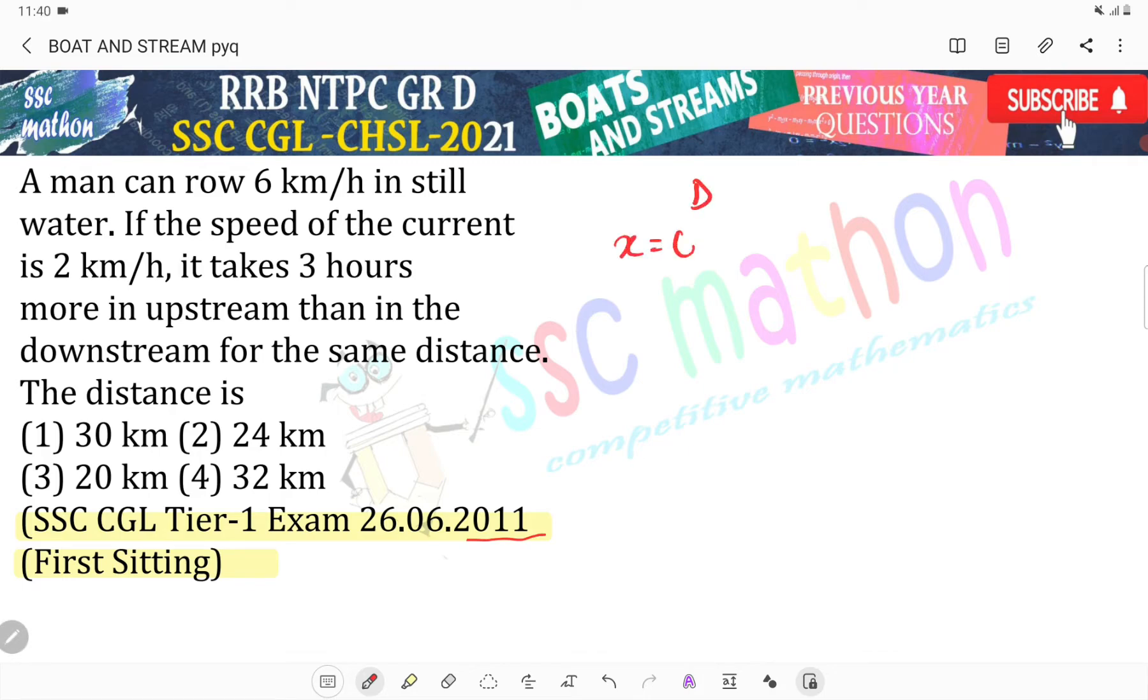Man's speed is 6 km per hour, and y is the speed of the current, 2 km per hour. Now see one thing.